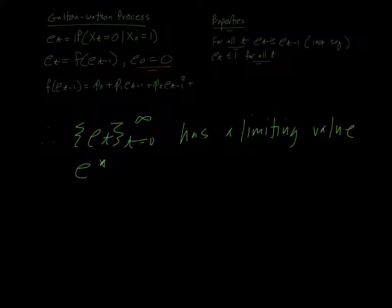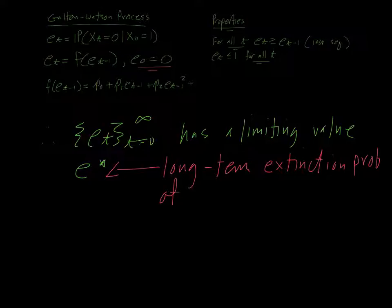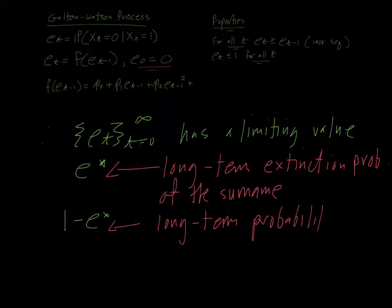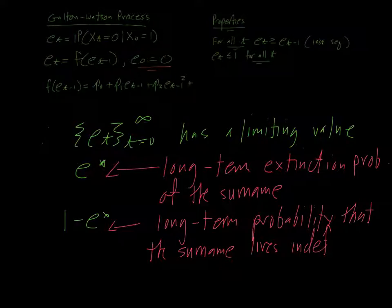And we're going to call this limiting value E star. And this E star is the long-term extinction probability of the surname. And 1 minus E star is the long-term probability that the surname lives indefinitely. So those are two interesting things. If E star is 1, then that means your name is sure to go extinct. If it's smaller than 1, then your name will likely have some longevity associated with it.